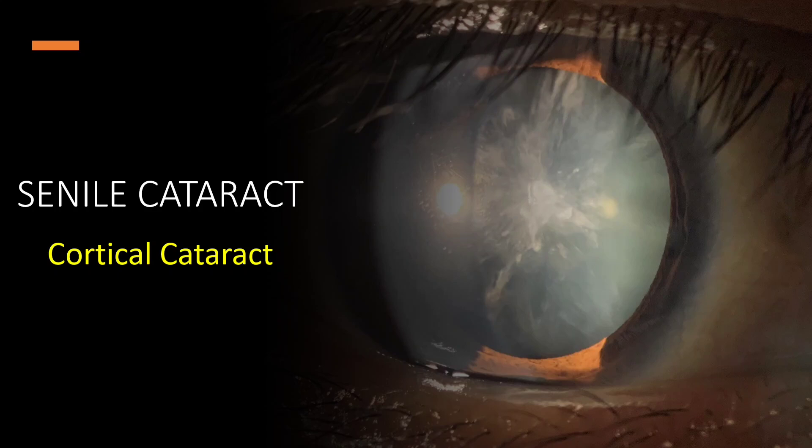Hello and welcome back to iSpy, a new video in a series of lens and cataract lectures. This video is a continuation of senile cataract — the first part on nuclear cataract has already been discussed. The link for nuclear cataract can be found in the description box below. So let's start with our second type of senile cataract: cortical cataract.